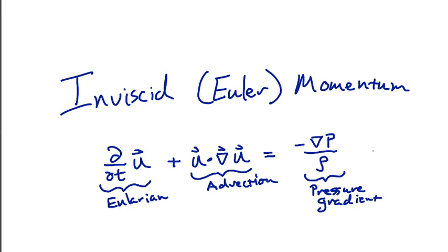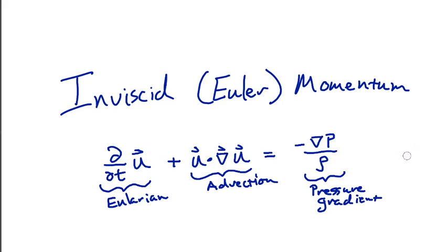We call this an inviscid equation because it doesn't have any kind of Laplacian of u with a diffusion coefficient out front — it doesn't have anything like that. That would be a viscosity, and we'll meet viscosities later in the course. For now, we're going to consider just an ideal motion with no viscosity, no internal friction.